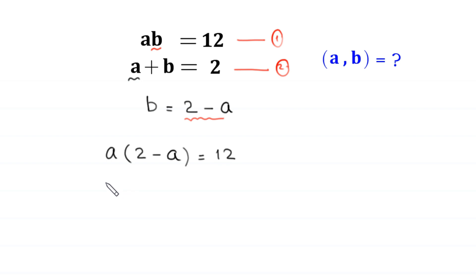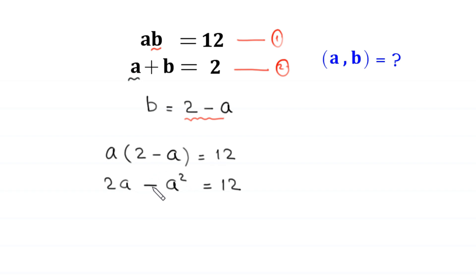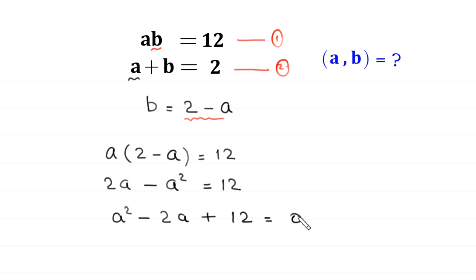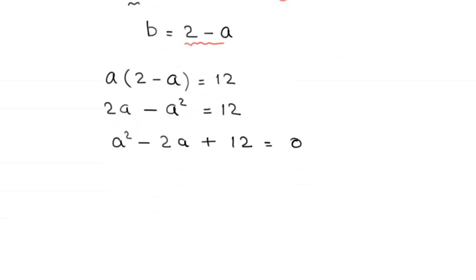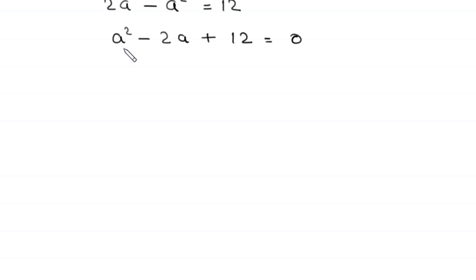Now, a times 2 is 2a, and a times negative a is negative a squared, so negative a squared plus 2a is equal to 12. We move these two terms to the right hand side. This equation will become positive a squared minus 2a plus 12 is equal to 0. Now, this is a quadratic equation and it is not factorable.